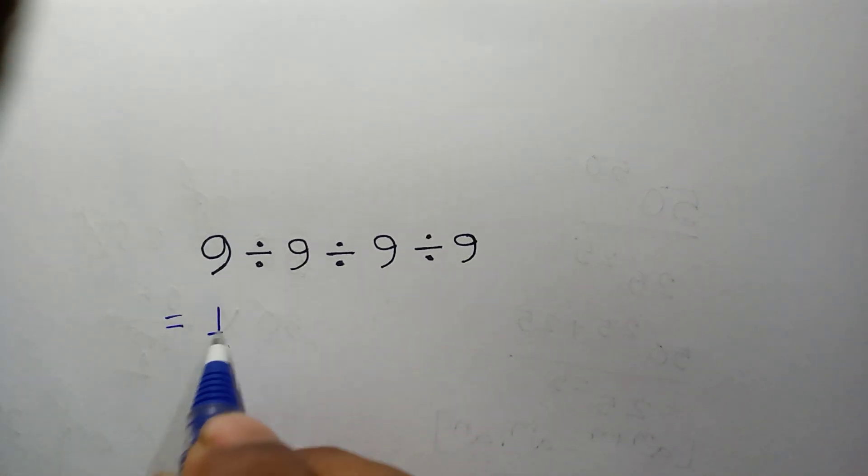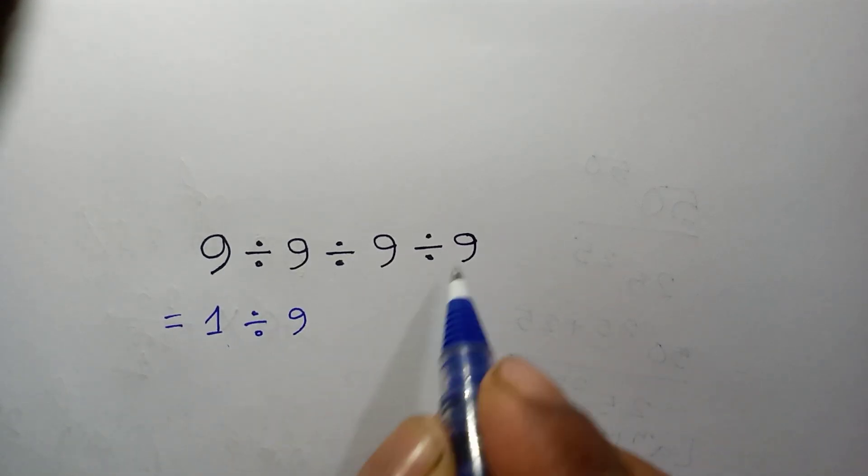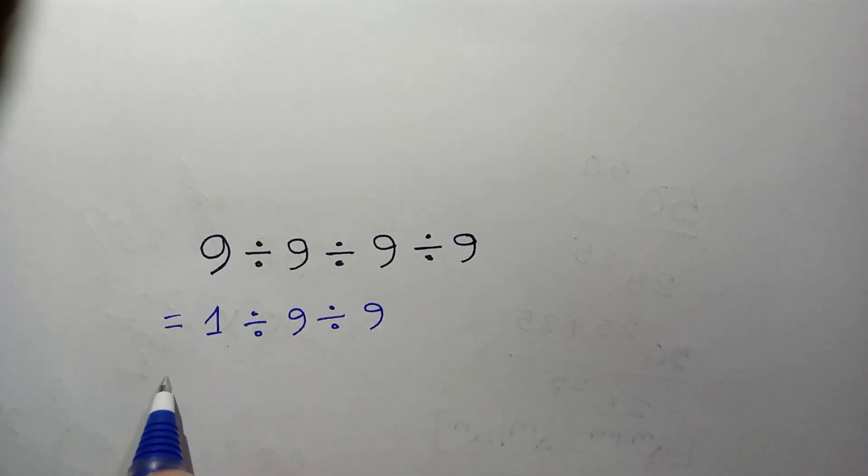9 which is 1 divided by this 9 and divided by this 9 is equal to this 1 divided by 9.